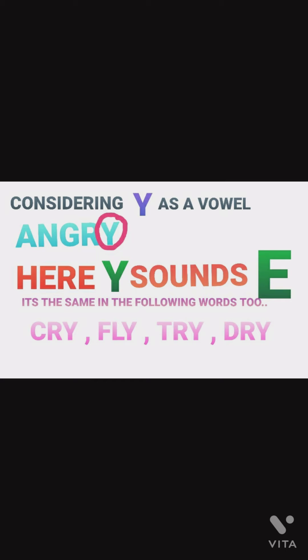For example, in 'angry', Y sounds like E. But in 'cry', 'fly', 'try', 'dry', it sounds like I. So, we can say that Y is a vowel.